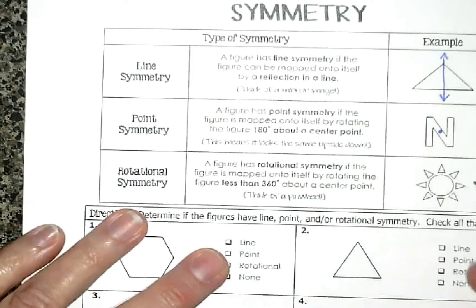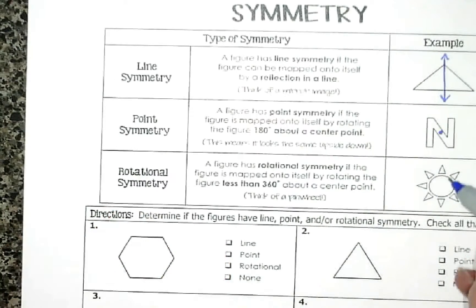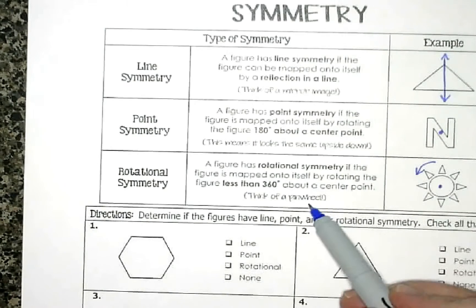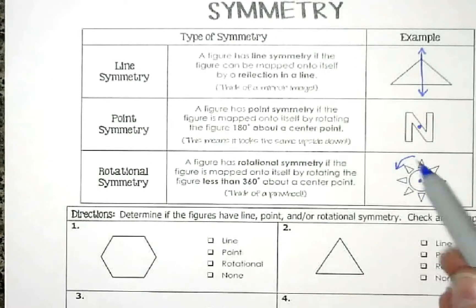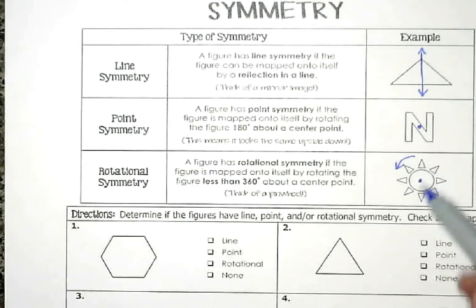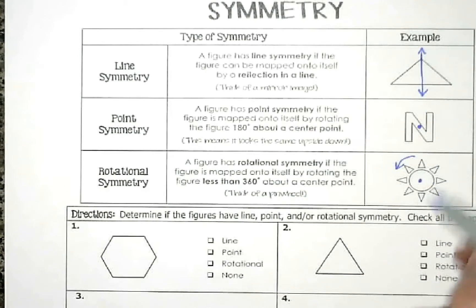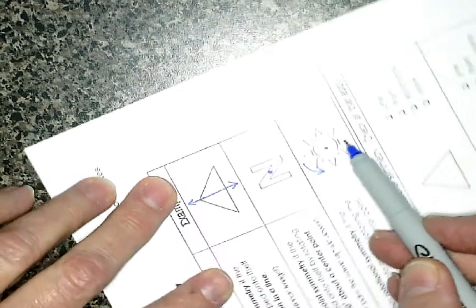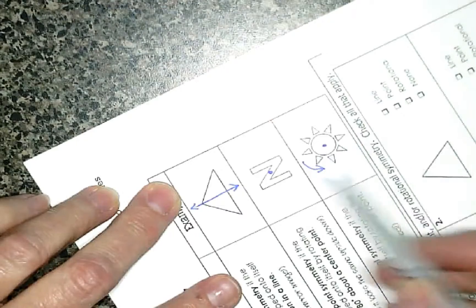Rotational symmetry — we haven't done a lesson on rotational yet, but basically you think of a point and the figure rotates around it, like a pinwheel or like an arrow on a game board. It spins around. As long as it looks the same while spinning — nothing's changing, it still looks exactly like it did when it first started — that's rotational symmetry.